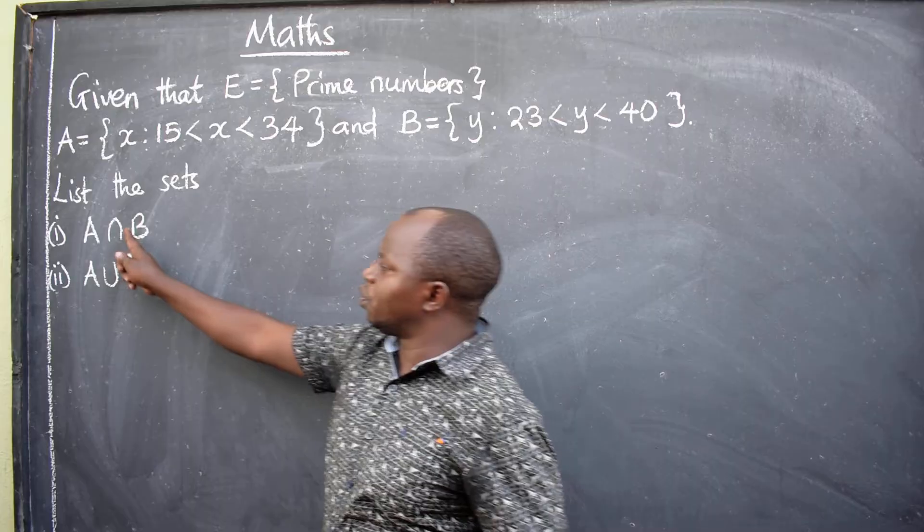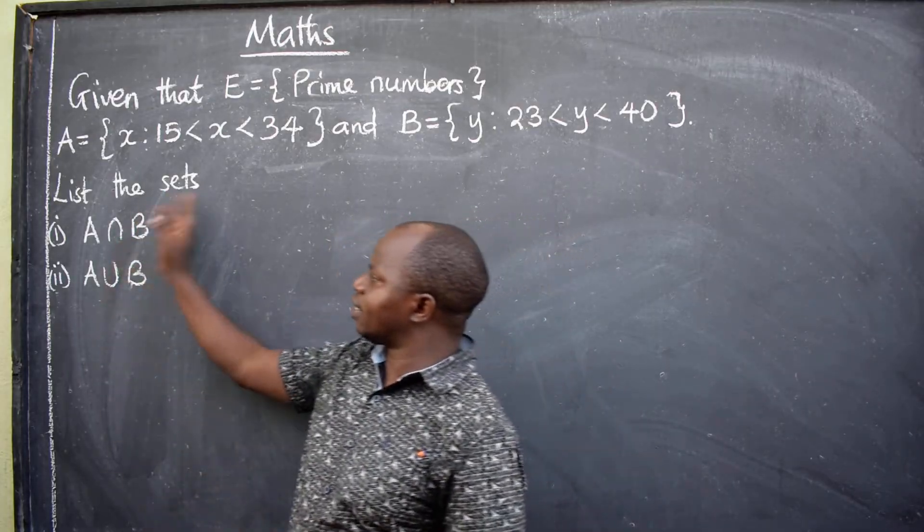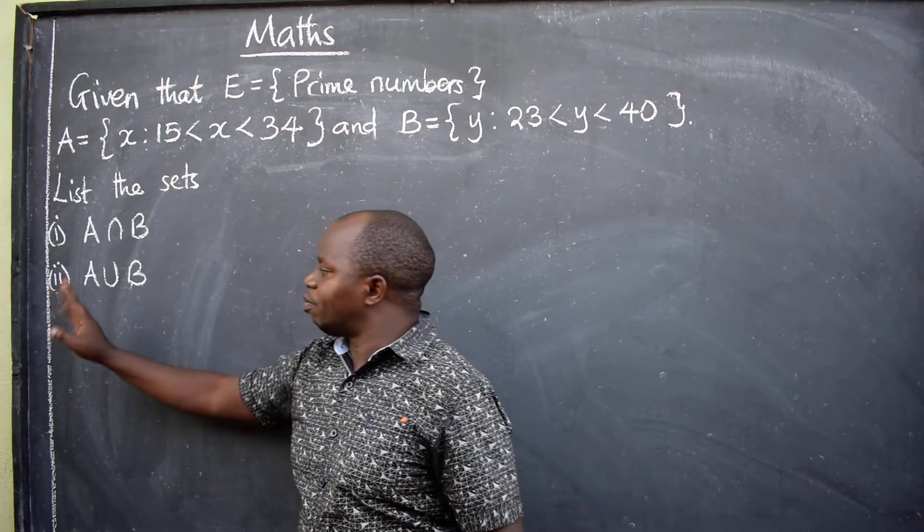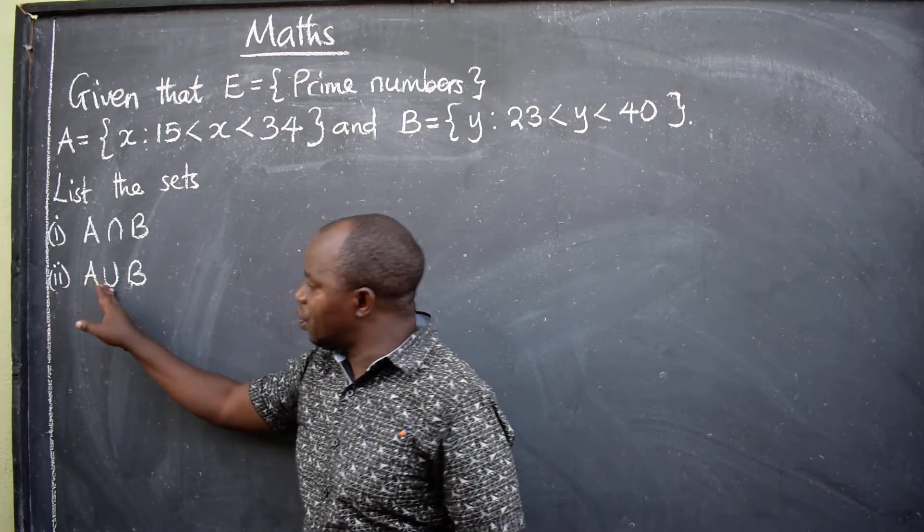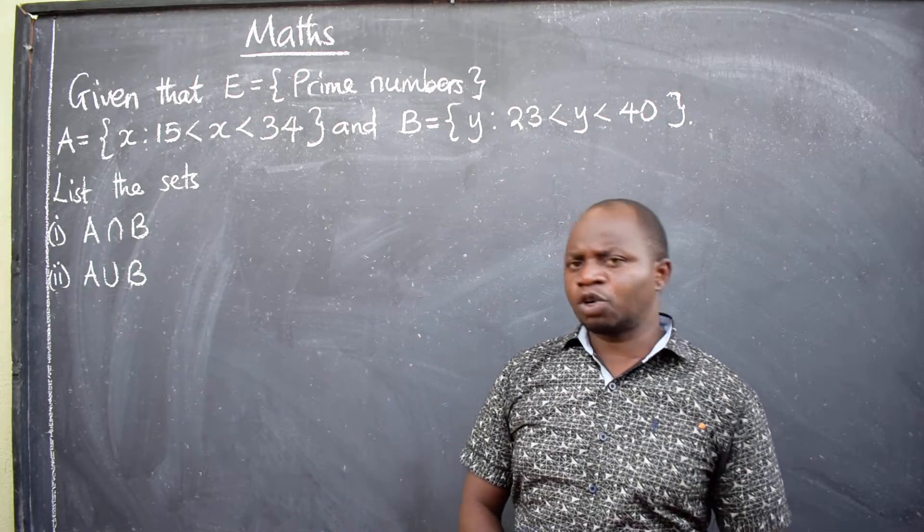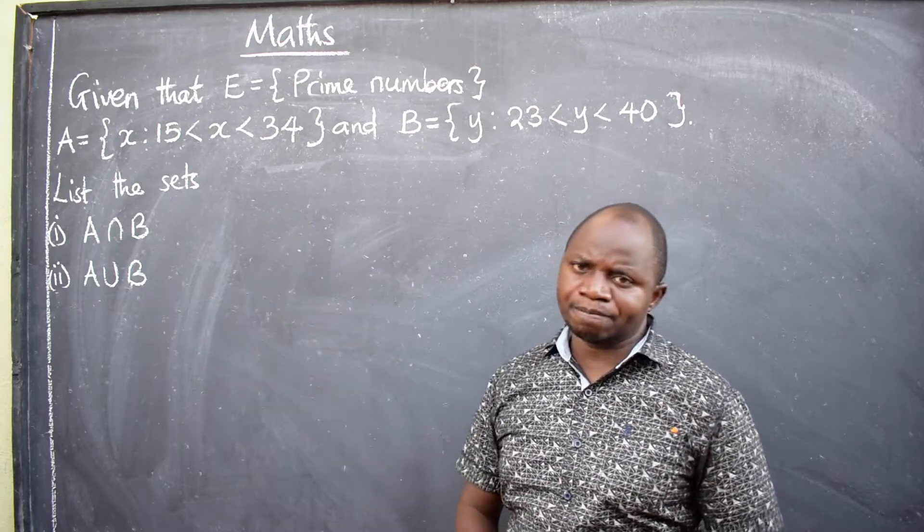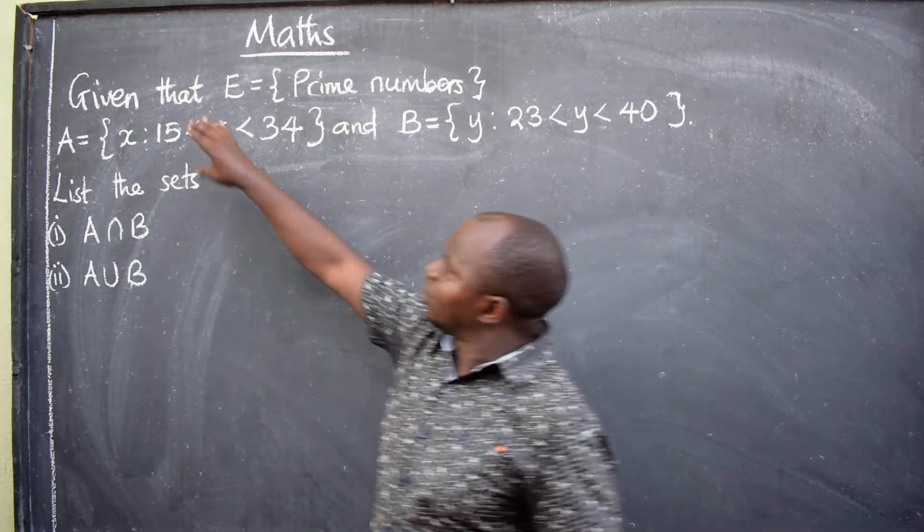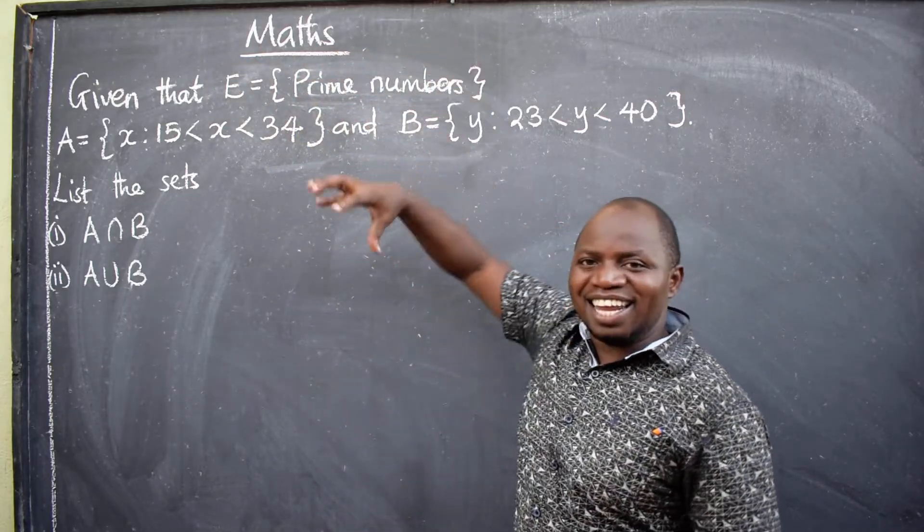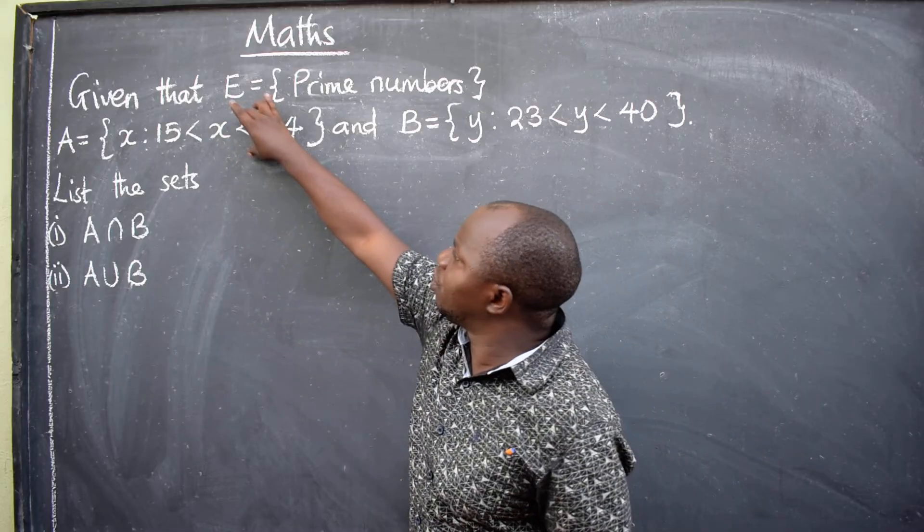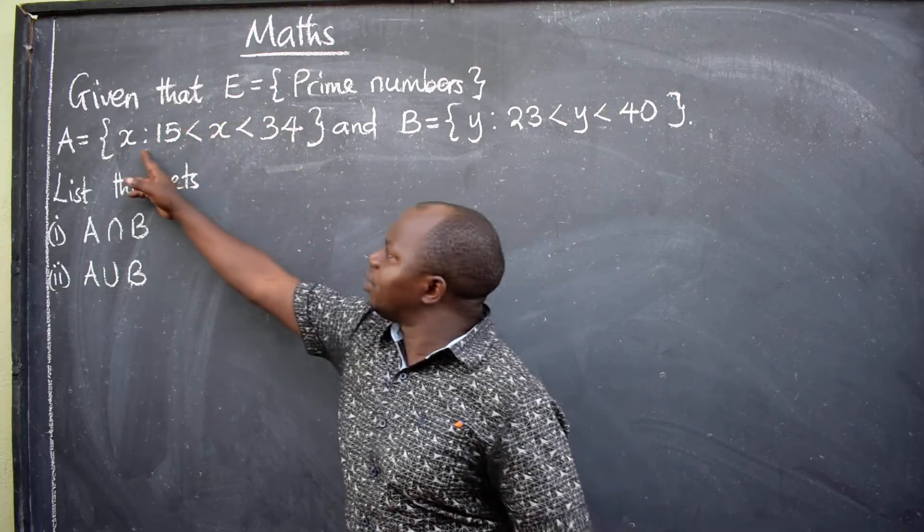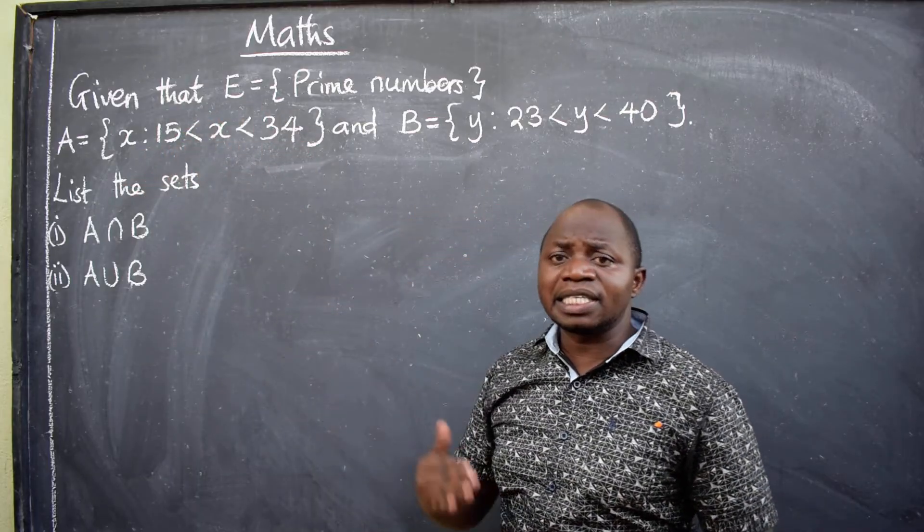Now we have got these two parts. List the sets: Roman numeral 1, A intersection B. Roman numeral 2, A union B. The question is coming from a topic called sets. These are sets. We are told that the universal set should be prime numbers. Under the universal set we have these two sets. Now the two sets are in set builder notation. When you see something like this, it means it is in set builder notation.